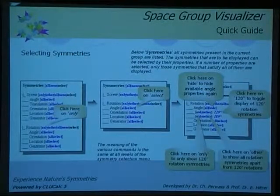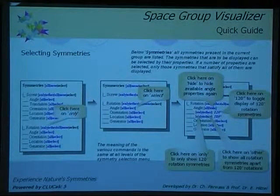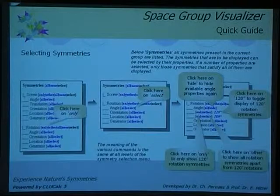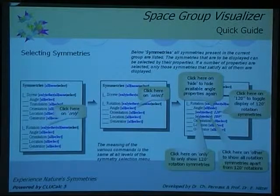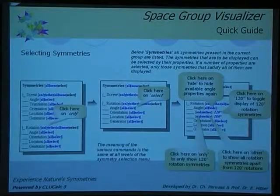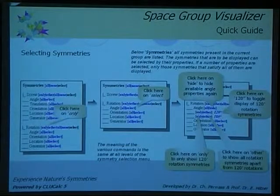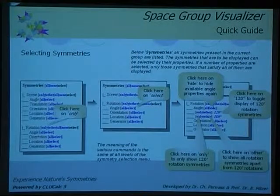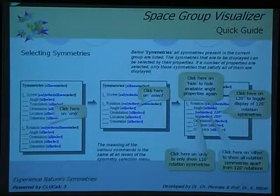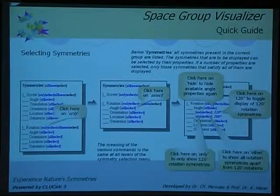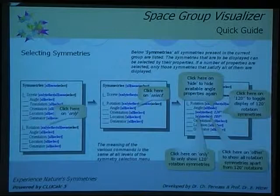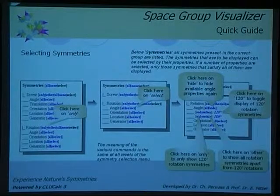When you have this full view for complex space groups, sometimes it's hard to find what element is where because there are so many and the view may be cluttered. You have a rich menu of selecting, for example, only rotations, then only rotations of a certain angle, or only rotation axes which appear in a certain place in the crystal cell. Or you can select them by geometric algebra generator, one by one, if you want.